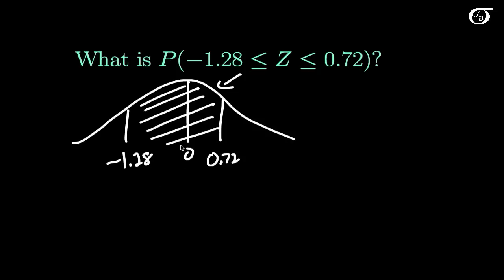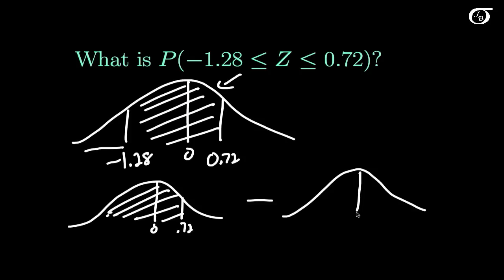Well, our table gives us the area to the left. So if I look up 0.72, I'm going to get this entire area to the left. That's not what I need because I need to take off this little bit here. So I'm going to subtract off the area to the left of minus 1.28, and we can get both these areas from the table.